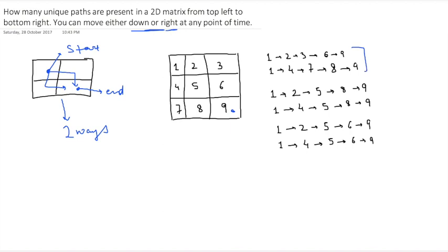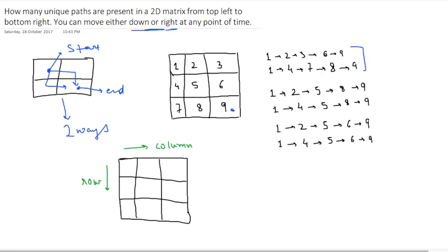Or you can go one, two, five, eight, nine, or one, four, five, eight, nine. Similarly one, two, five, six, nine, and one, four, five, six, nine. So we will use dynamic programming to solve this problem.